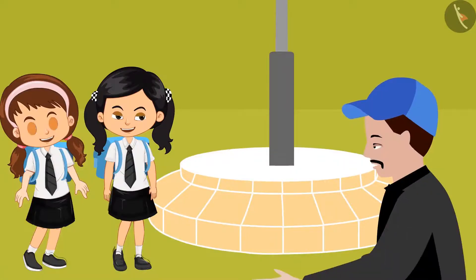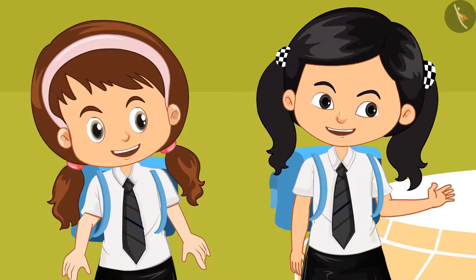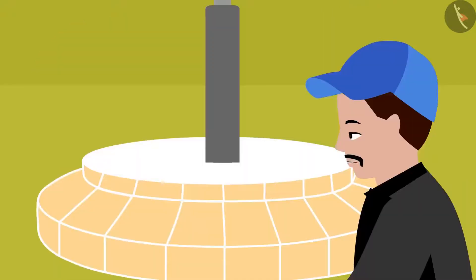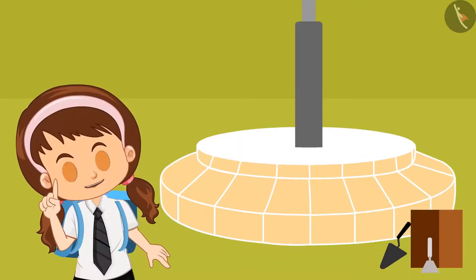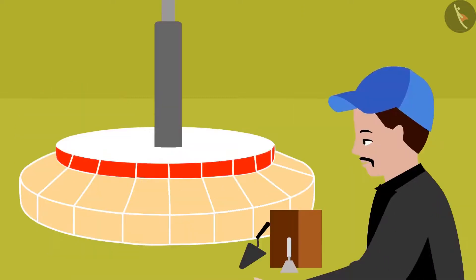The father asks: kids, I have to place circular tiles around the flagstaff compound — will you both help me? The children reply: really, can we help? Father says: yes, you can help me to make a pattern with the tiles and I will place them, otherwise your uniform will get dirty. He starts: first, a circle of red tiles like this.